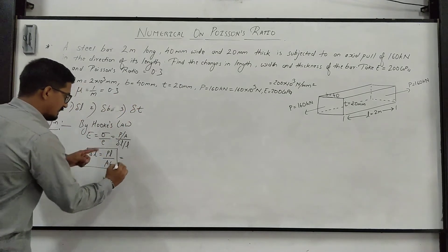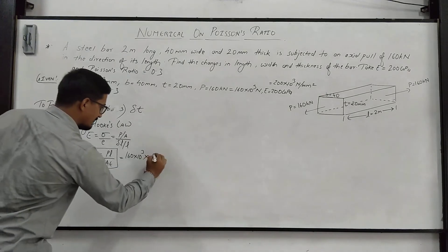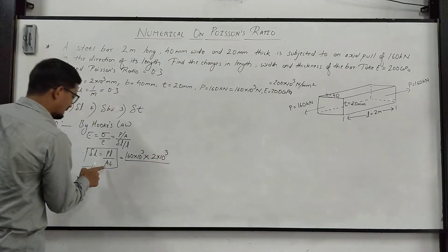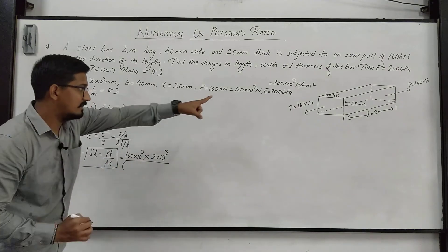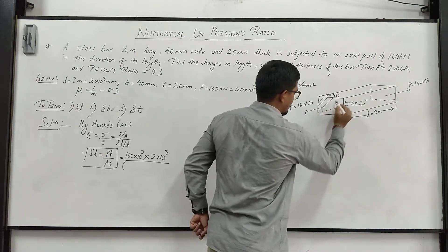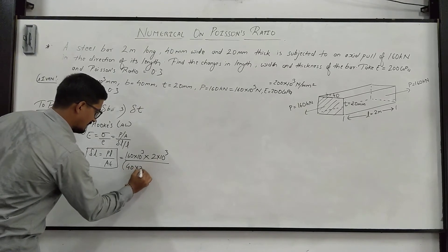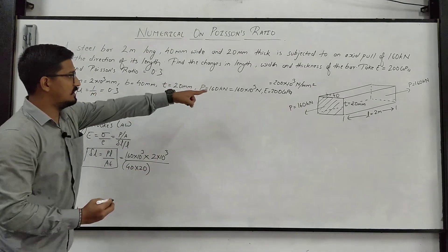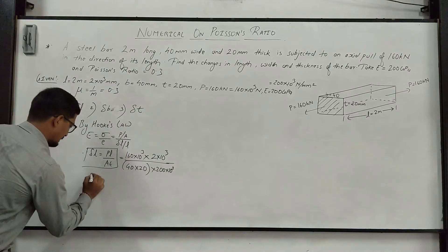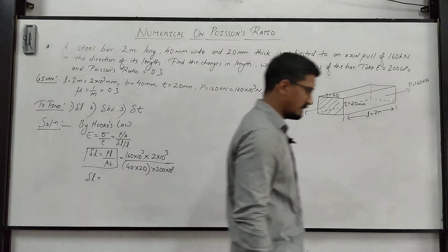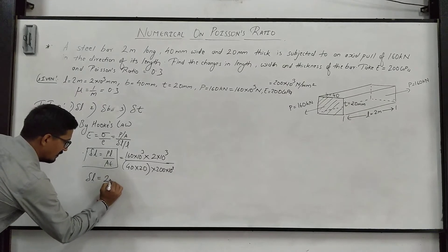So P here is 160 into 10 raise to 3. Length is 2 meter, I have already converted in the given part into 2 mm. Now what is this area? The area here will be 40 into 20, the shaded area, the cross sectional area. Young's modulus is given as 200 GPa, so 200 into 10 raise to 3. So we get delta L is equal to, let me cross-check the answer, it is coming out to be 2 mm. So delta L is coming out to be 2 mm.